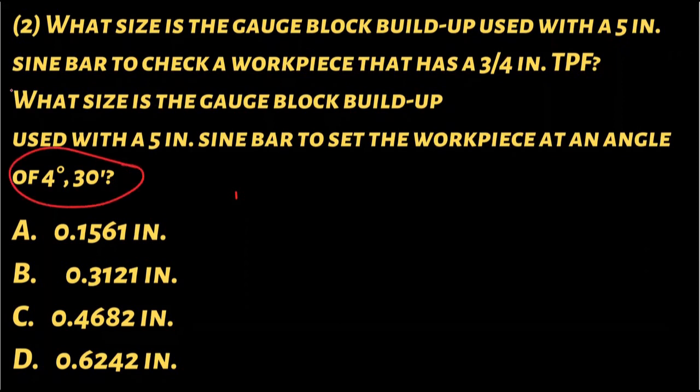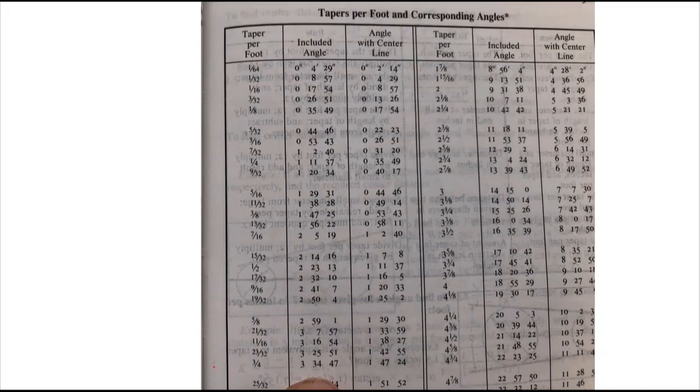This number is not correct so let's take a look here. We take a look down here in the Machinery's Handbook - that's the proper angle for three-quarters per foot taper, that's the included angle and that's the angle from the center. So this is our new question here.